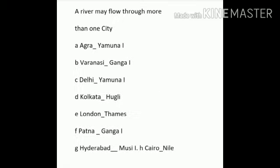One more exercise: name the river of the city. Write I for Indian. A river may flow through more than one city. Correct the answer with this video. A - Agra, Yamuna, I. B - Varanasi, Ganga, I. C - Delhi, Yamuna, I. D - Kolkata, Hooghly, I.